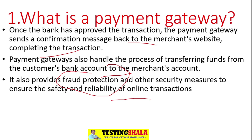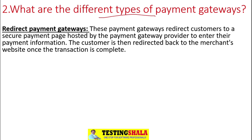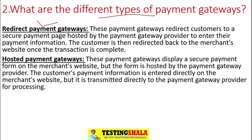Now let's understand the different types of payment gateways in the IT industry. The first type is redirect payment gateways, where the payment gateway redirects the customer to a secure payment page hosted by the payment gateway provider to enter payment information. The second type is hosted payment gateways, which display a secure payment form directly on the merchant's website, such as Amazon, where you enter all your information before it goes to the payment gateway provider for processing.